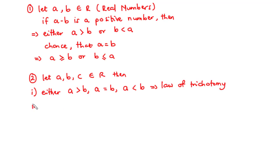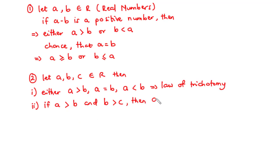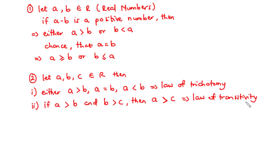Two: if a is greater than b and b is also greater than c, then we can make the conclusion that a is greater than c. We call this the law of transitivity.